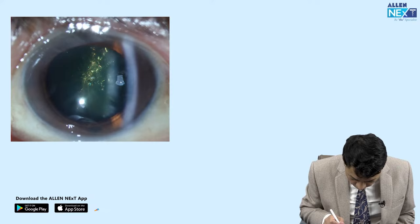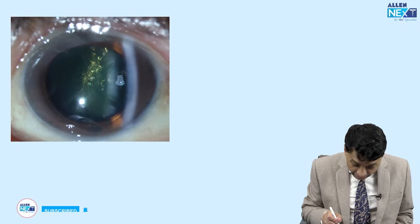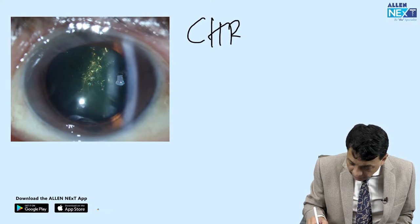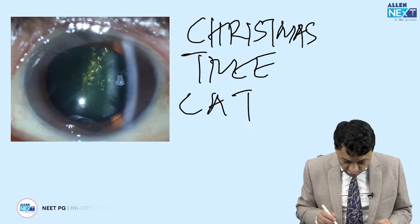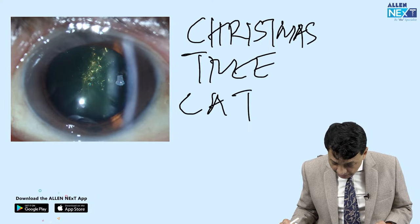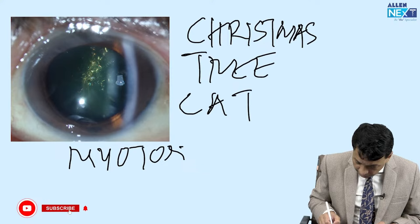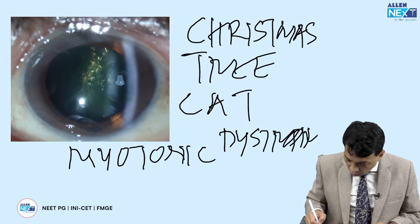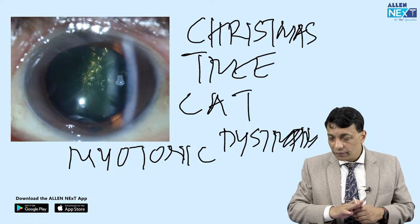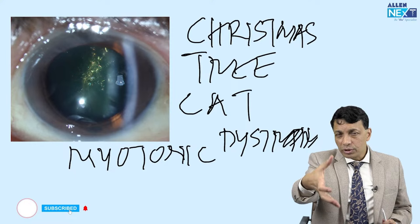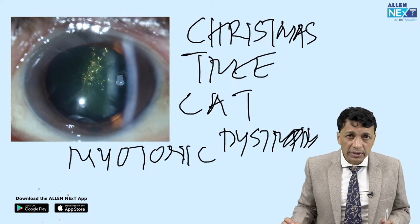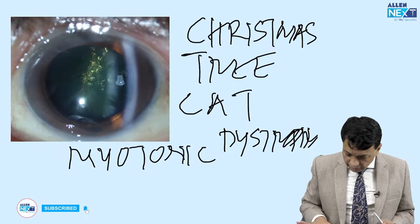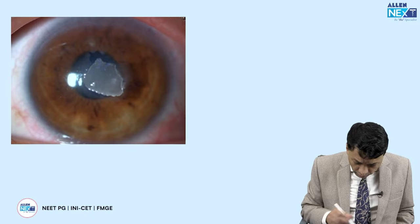Look at this brightly colored, Christmas tree-like appearance — this is the Christmas tree cataract. The shining refractile elements look just like a Christmas tree hung with lights. The Christmas tree cataract is found in myotonic dystrophy. These patients often have frontal baldness with a hatchet-like face, and classically the muscle goes into spasm when shaking hands — they cannot release your hand. Christmas tree cataract is the ocular finding of myotonic dystrophy.